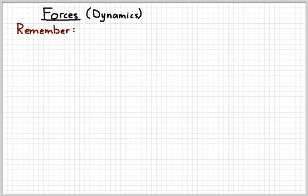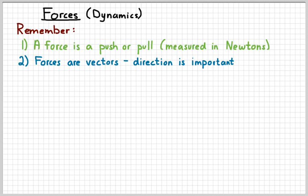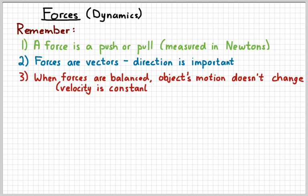But first, a little bit of review. Remember, first of all, that a force is a push or a pull, and the unit that we measure pushes and pulls in is Newtons. Secondly, remember that forces are vectors, meaning that direction is important — there's a big difference between pushing something to the right and pushing it to the left. Third, when the forces are balanced, the object's motion does not change. This is referred to as the law of inertia, so if there is a balanced force on an object, its velocity is constant.